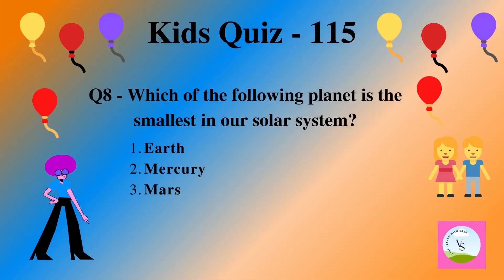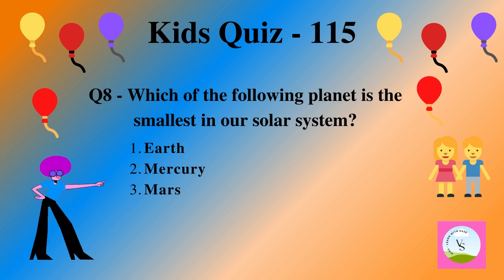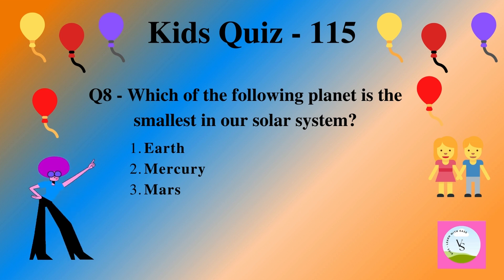Question 8. Which of the following planets is the smallest in our solar system? 1. earth, 2. mercury, 3. mars.